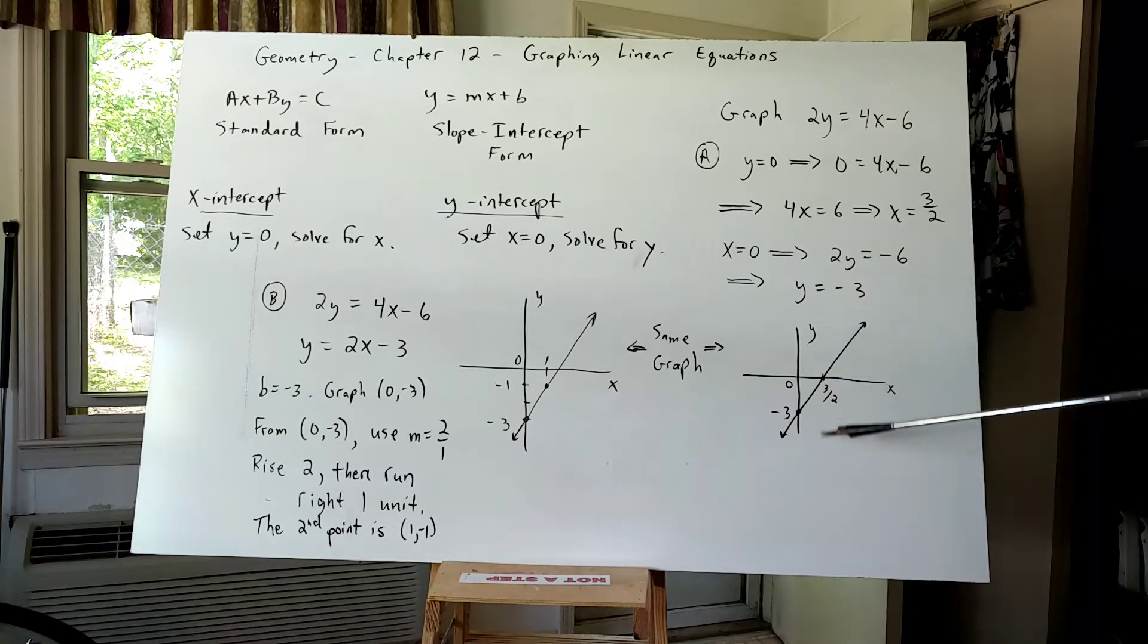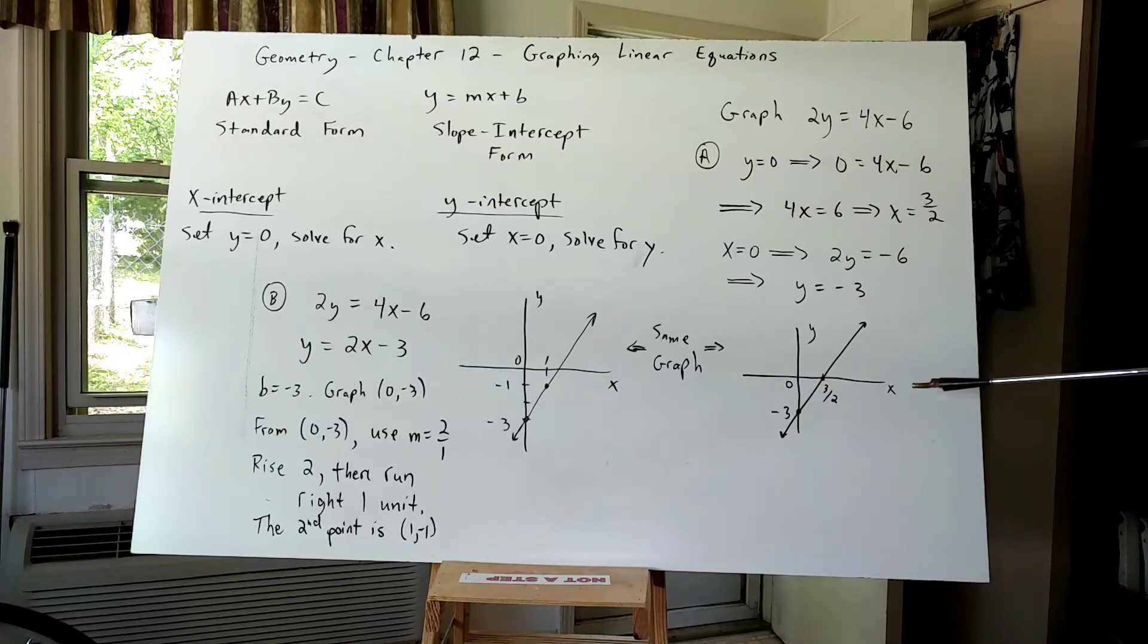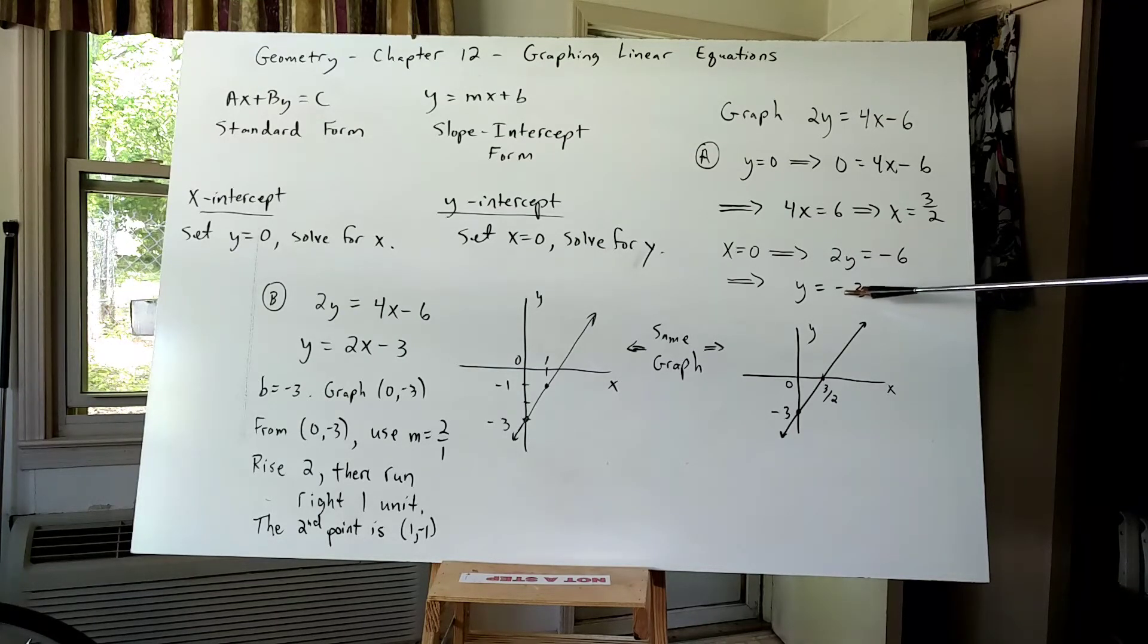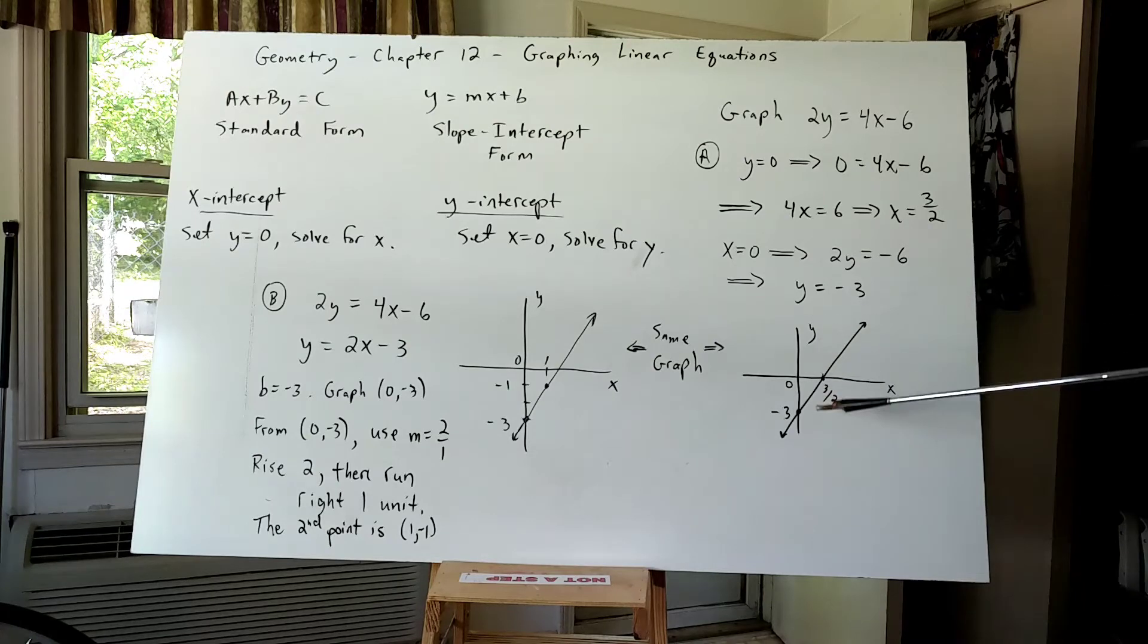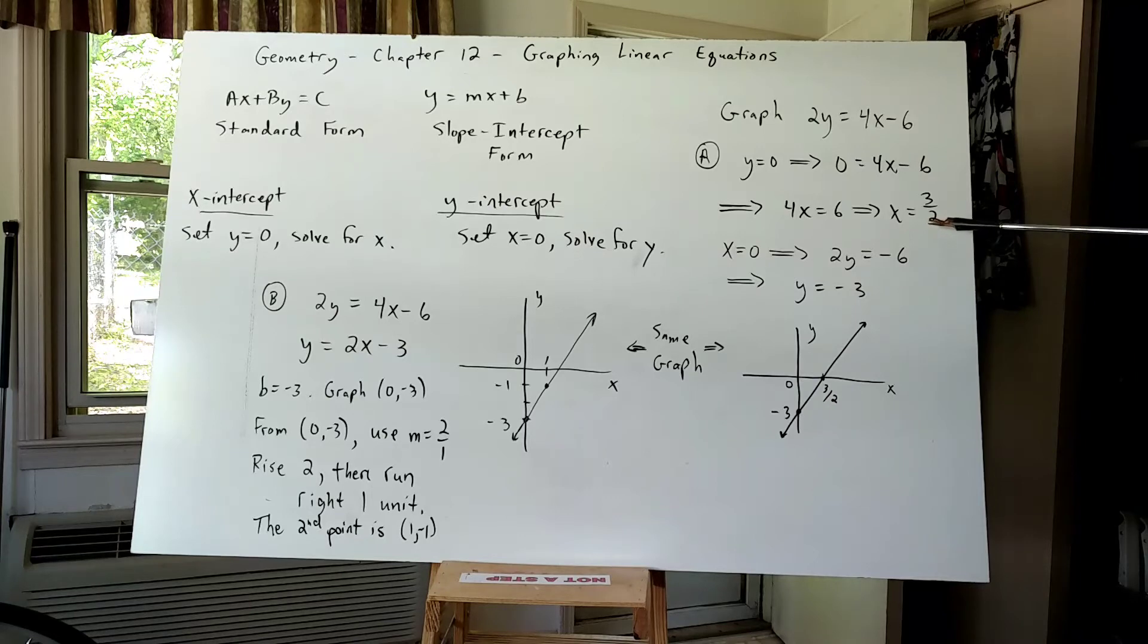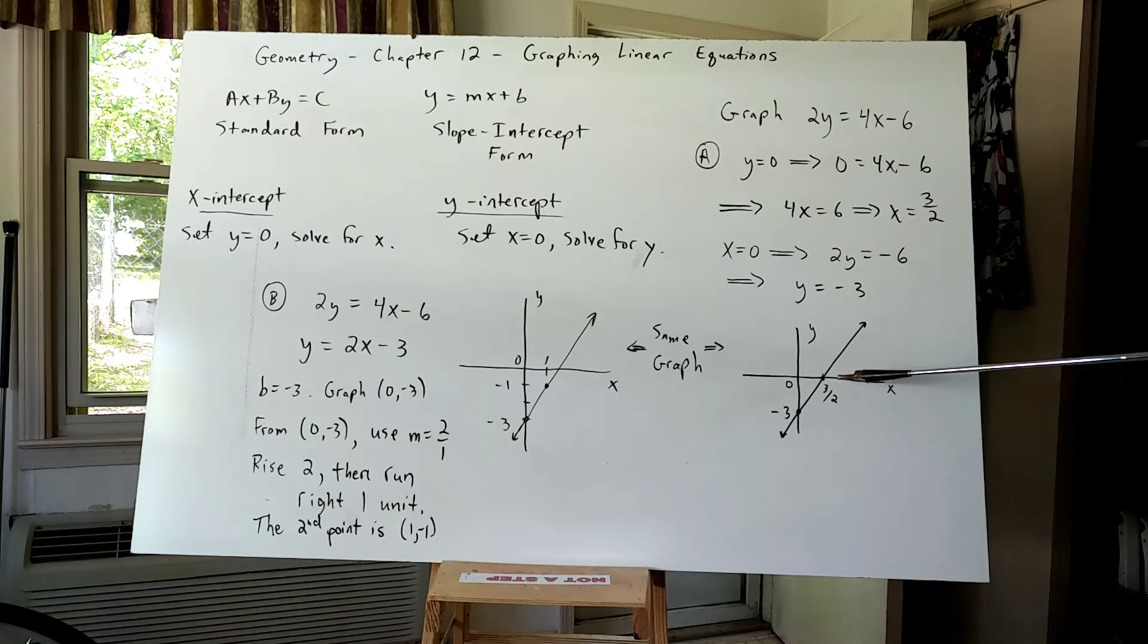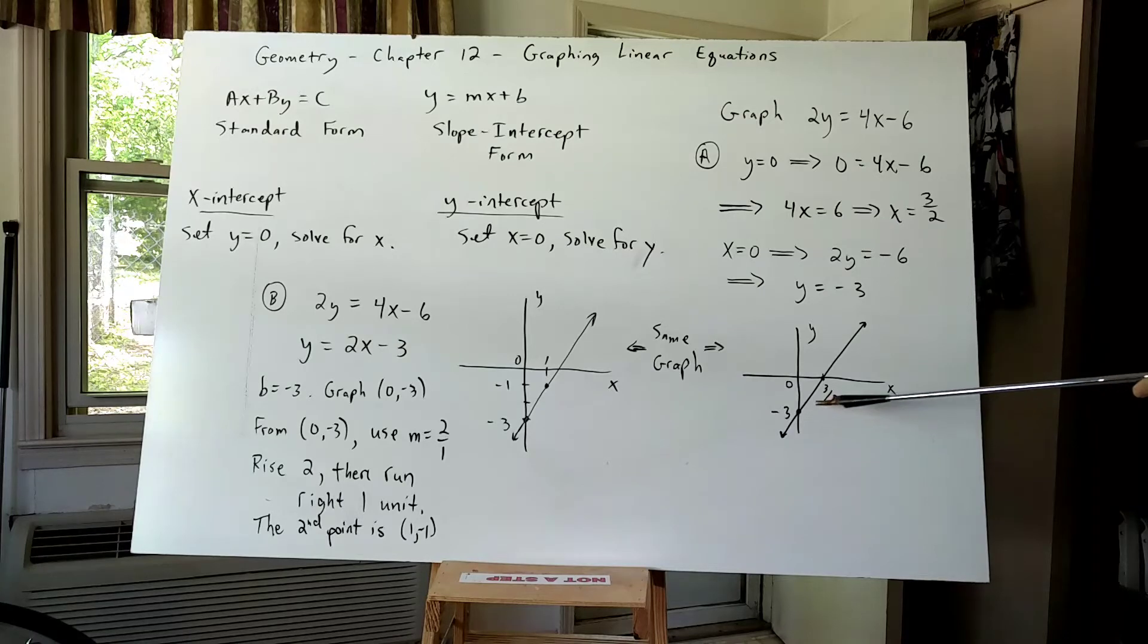I then draw a Y axis and an X axis or use graph paper. I go down to where Y is negative three. That is the Y intercept. And I plot a point where the X axis meets the Y axis called the origin, labeled with a zero. Then the X intercept is three halves. So I move right of zero to three halves, plot that point. Then I draw my line through the two intercepts and my equation is graphed. It is a linear equation, so the graph is a line.